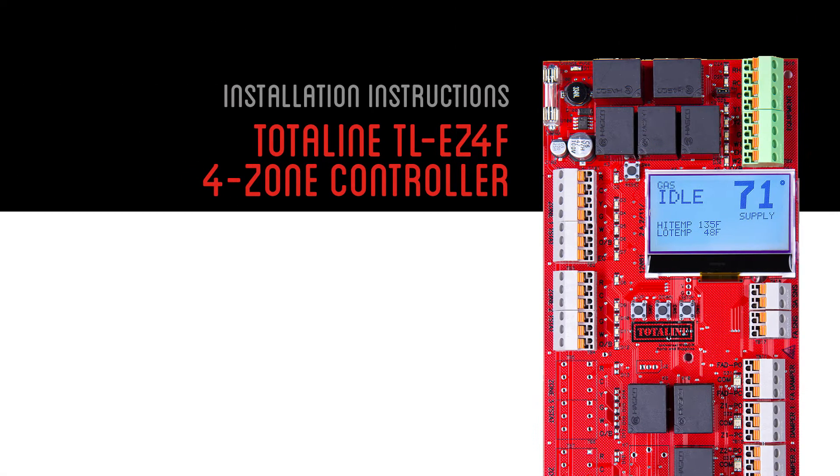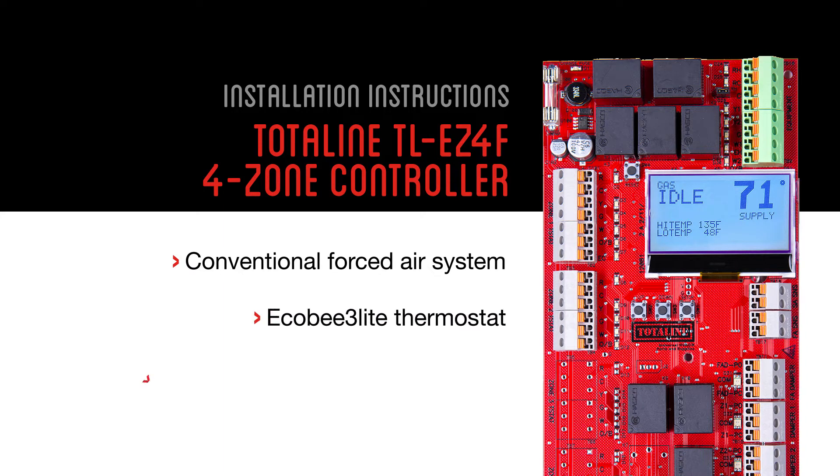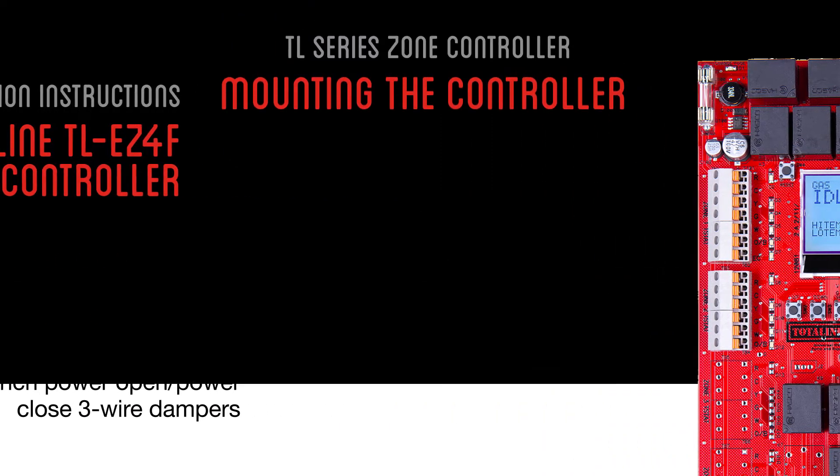Be sure to check the compatibility of all devices prior to installation and note that the supply air sensor is required for the system to operate. In this video, we're installing the TotalLine TL-EZ-4F four-zone controller to a conventional forced air system with an Ecobee 3 light thermostat and TotalLine 8-inch power open, power close, three-wire dampers.